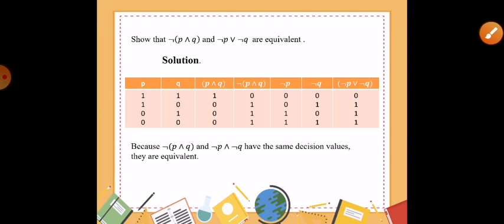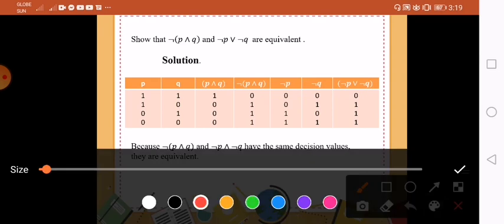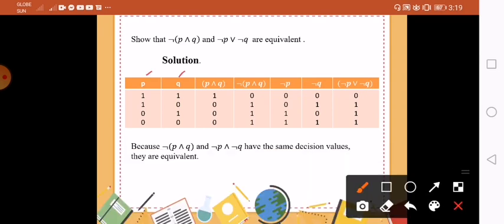Show that not (P and Q) and not P or not Q are equivalent. Again, we need the two propositions P and Q. So we have 1, 1, 0, 0 for P and 1, 0, 1, 0 for Q. First, we have to do P and Q. Remember the rule for conjunction: 1 and 1 is 1, or else 0. Next, negate it, because we need that for this one. So the negation of that will become 0, 1, 1, 1.